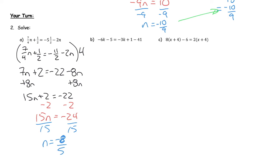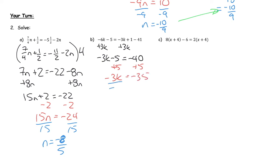For the next one, I add 3k to both sides to get negative 3k minus 5 equals — on the right-hand side I have 1 minus 41, which is negative 40. Adding 5 to both sides gives negative 3k equals negative 35. Dividing both sides by negative 3: negative over negative is positive, so k equals 35 over 3. Since 35 is not a multiple of 3, that's as simple as it gets.